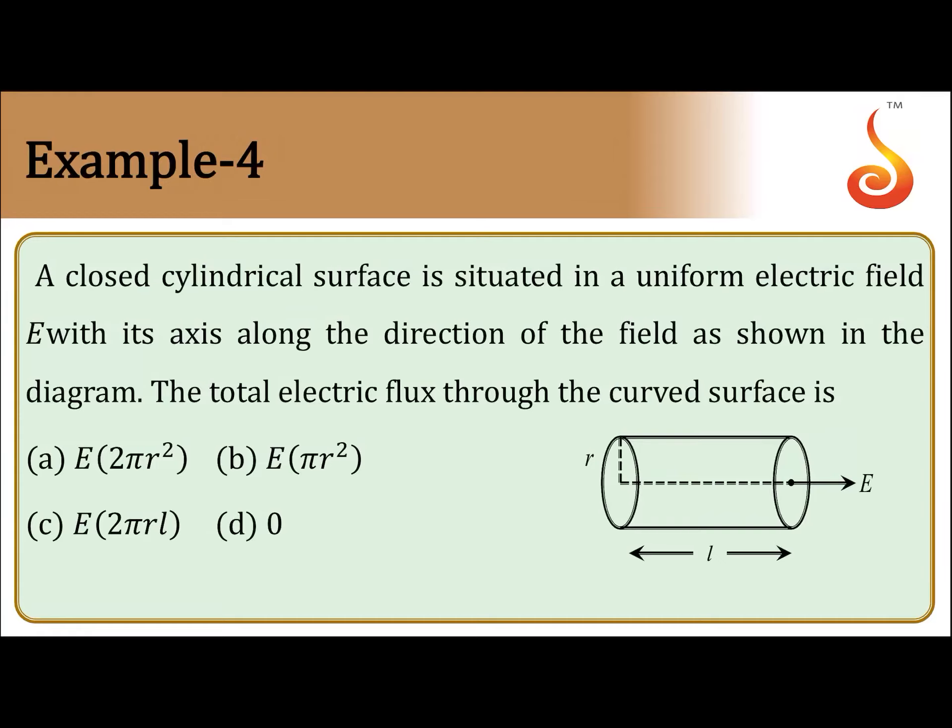Example number 4. A closed cylindrical surface is situated in a uniform electric field E with its axis along the direction of field as shown in the diagram. The total electric flux through the curved surface is: